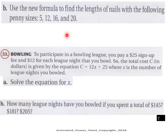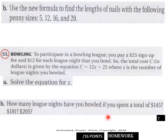And then page seven, part b, and then 33 bowling, solve the equation for x. And part b, how many league nights have you bowled if you spent a total of $145. And then these other amounts, so how many league nights have you bowled with those amounts of money spent, 16 points here page seven. Again, you'll need more room, put that on your answer sheet and send it in with your homework PDF.